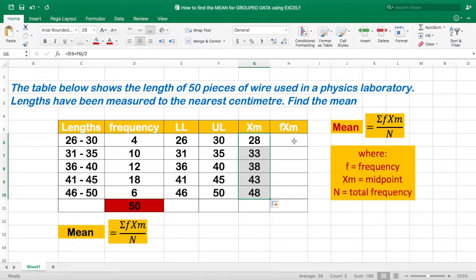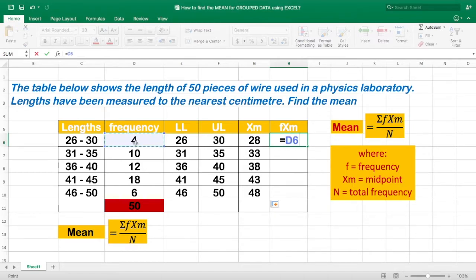And lastly, we need to find the product of the frequency and the class mark. The frequency is 4, and the class mark is 28. Just multiply that by equal, then the first frequency. For the multiplication, that is the asterisk or the star, and multiply it by xm, and hit enter.